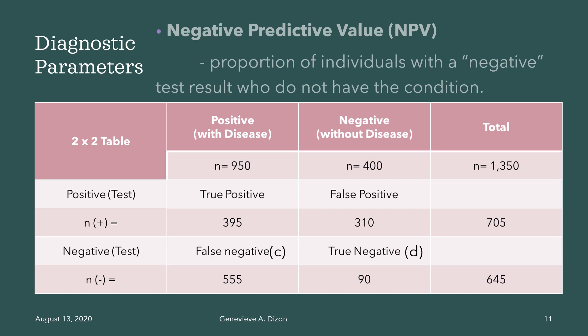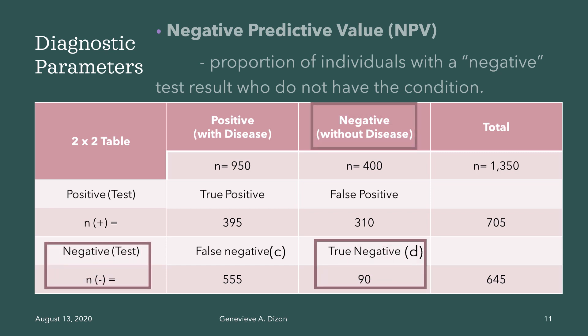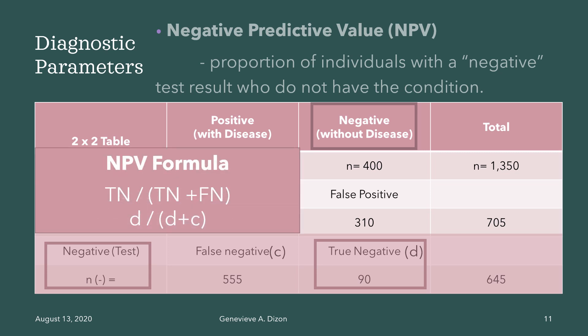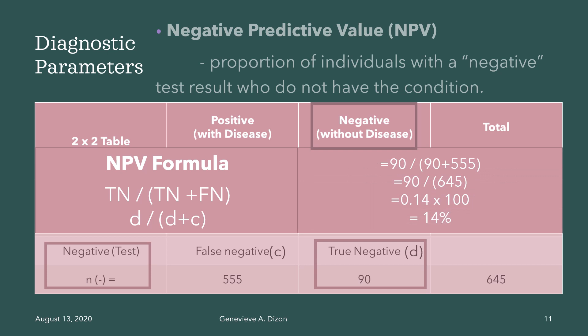The fourth diagnostic parameter is the negative predictive value, defined as the proportion of individuals with a negative test result who do not have the condition. The formula is true negative divided by true negative plus false negative, or D divided by D plus C. The values are 90 divided by 90 plus 555. Multiply by 100 to get the percentage. The NPV of this test is 14%, meaning this test can only give a 14% rate of giving a negative test result to a person who does not have the disease.